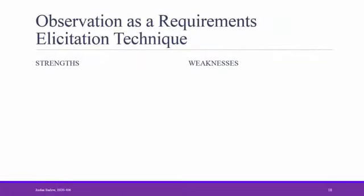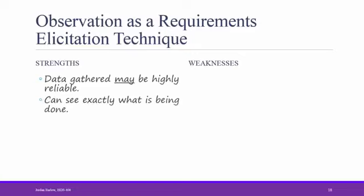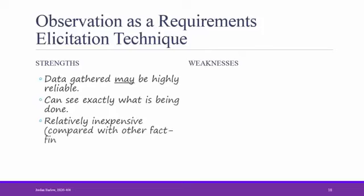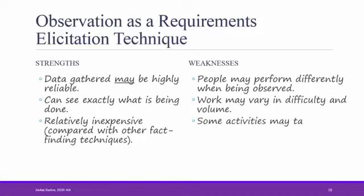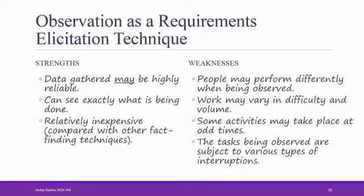Let's summarize some strengths and weaknesses of using observation as a requirements gathering technique. Data that is gathered might be highly reliable, because you are seeing the work process in action. You can see exactly what's being done. An observation is relatively inexpensive compared with other fact-finding techniques. The reason I say data gathering might be highly reliable is that people might perform differently when they're being observed. Some people get nervous about being watched. Work can also vary in difficulty and volume, so it's hard to get an exact picture by only observing once. Finally, some activities may take place at odd times, and you might not observe them during your formal observation period. And the tasks being observed are subject to various types of interruptions.